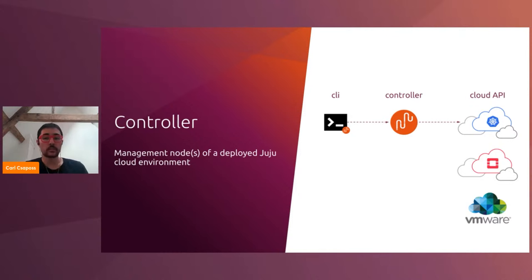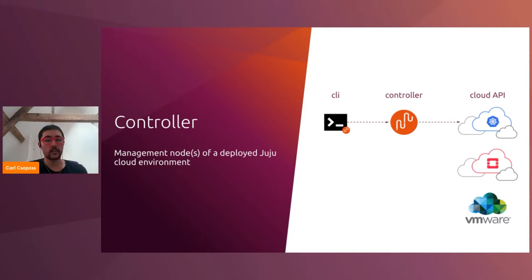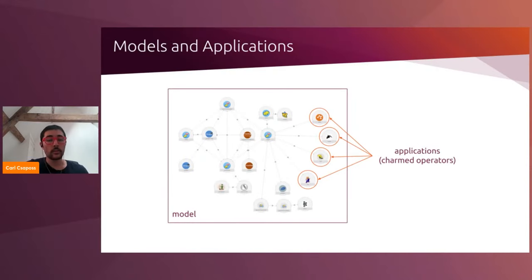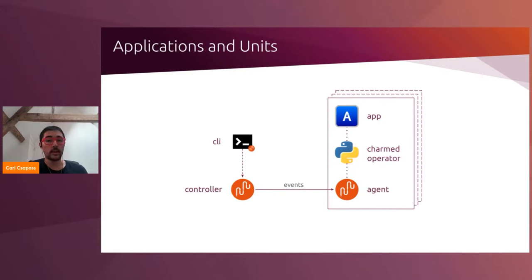One thing to notice with this design is that Juju provides a consistent interface on the command line across different clouds. Juju provides a simple UX for the person deploying applications, and then it translates that to the underlying API calls it needs to make to each individual cloud. Within a cloud, Juju has models. You can think of a model like a workspace — it's just a grouping of applications. An application can consist of multiple units. A unit is just the machine that the application is running on. In Kubernetes, the unit is a pod.